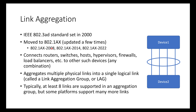Link aggregation is a standard used to connect routers, switches, hosts, hypervisors, firewalls, load balancers, etc. It's used across multiple vendors for multiple types of technologies, and we can connect any kind of device to any kind of device. It aggregates multiple physical links into a single logical link, called a LAG — link aggregation group. Typically at least eight links are supported in a LAG, but some platforms may support more.